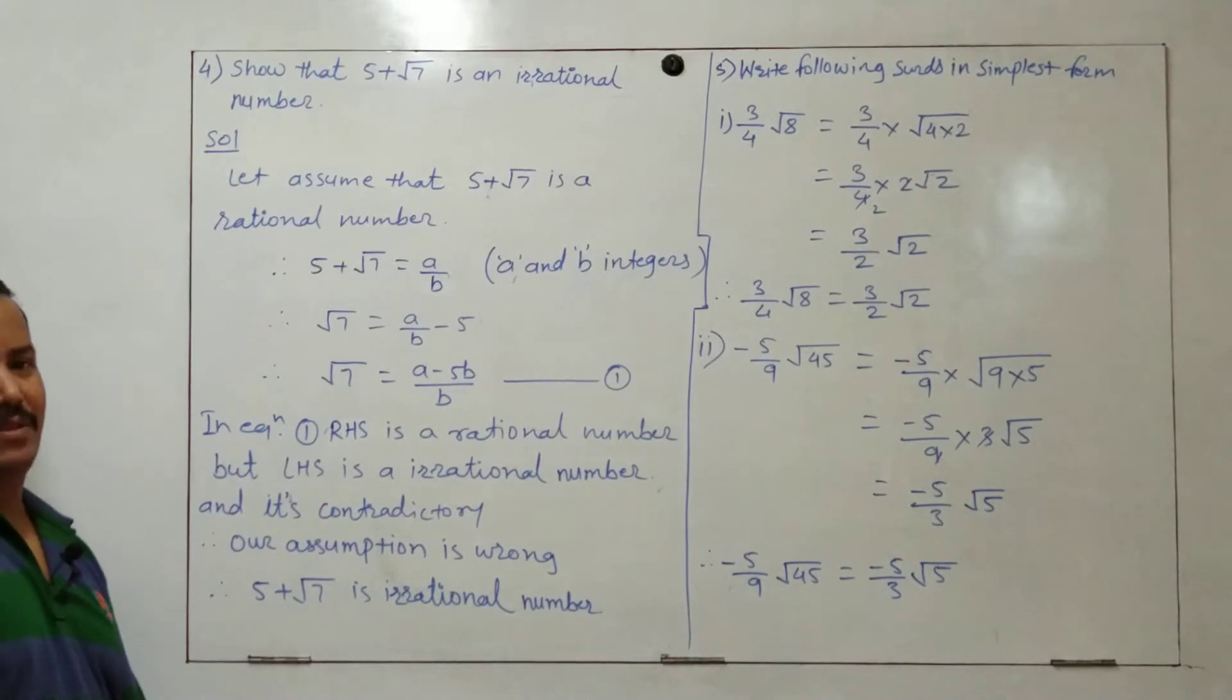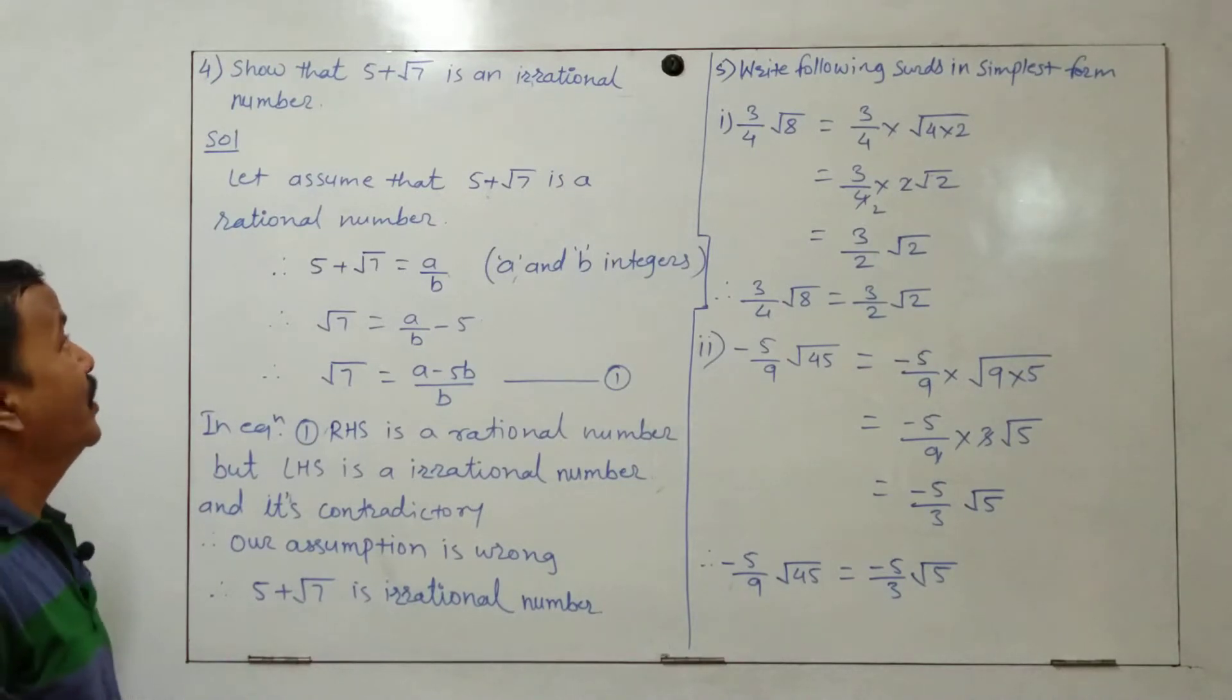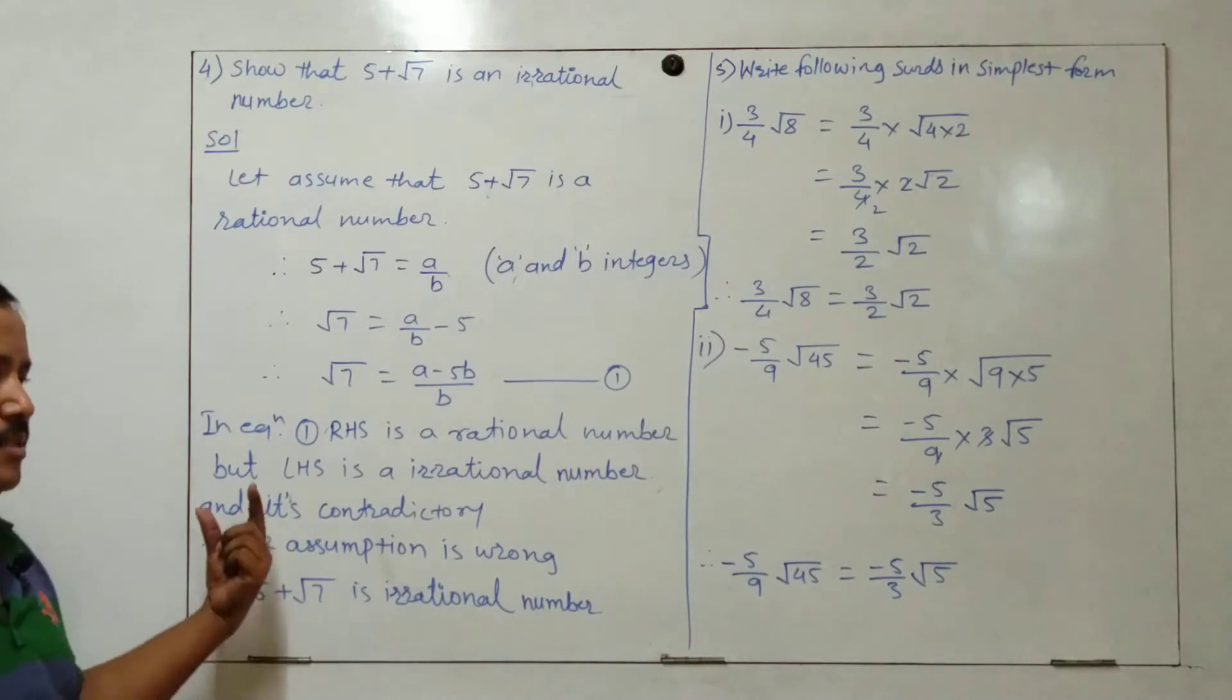Hello students, welcome to Max 12 Study Hub. Now we are going to start with problem set 2, question number 4. Question number 4 is: show that 5 plus root 7 is an irrational number. We solved something like this in exercise number 2.2.